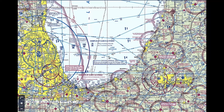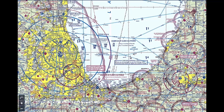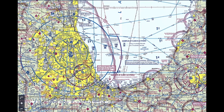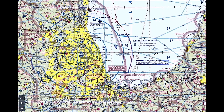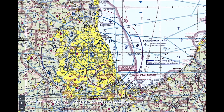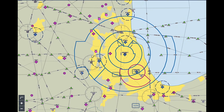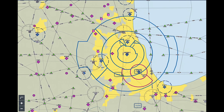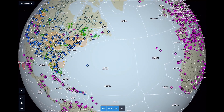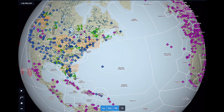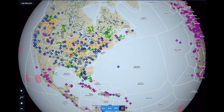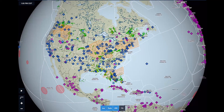ForeFlight Global Aeronautical Maps represent a paradigm shift from viewing scanned raster charts in an application to looking at a beautiful worldwide map rendered on the fly by raw aeronautical data. And this is just the beginning — what we're going to be able to do with maps over the coming months and years is exciting, and we think you're really going to love what we've put together.